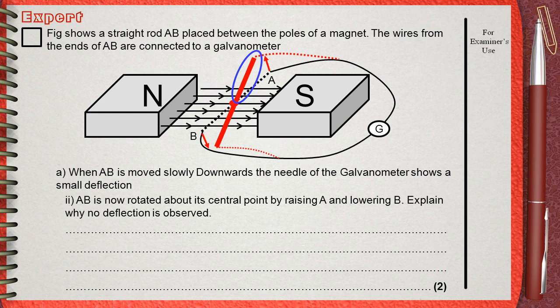You will see that half of the rod is moved up, so this will produce a current in a certain direction. The other half of the rod has moved down, and this produced an induced current in the opposite direction.